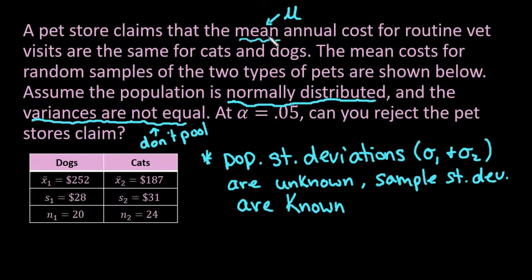When you have two samples, you could have dependent or independent samples, which helps you know what kind of two-sample test to use. In this case, cats and dogs are independent of each other — there is no overlap, and one does not depend on the other. Because they are independent samples, we use the traditional two-sample t-test and not the dependent sample t-test.